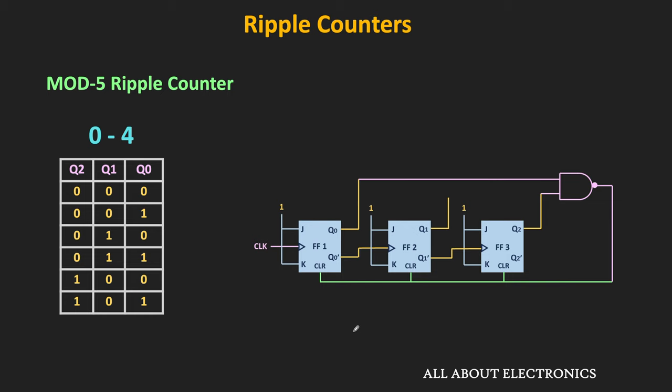Whenever the count goes to 101, the output of this NAND gate will become 0, and it will reset all the flip-flops to 0. In this way, the counter will get reset to 0. Typically, using the NAND gate in the feedback, it is possible to reset the counter at a specific count.